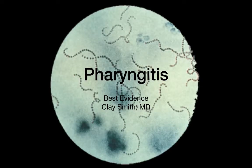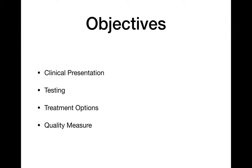Welcome to the first talk on pharyngitis. We're going to present some of the best evidence here for you today. What we're going to cover is the clinical presentation of pharyngitis and streptococcal pharyngitis specifically, but also some other common mimics. We're going to talk about testing — when to do it, when not to, who to test, who not to test — and treatment options, specifically focusing on when patients are penicillin allergic. And then finally, we're going to touch on an important quality measure.